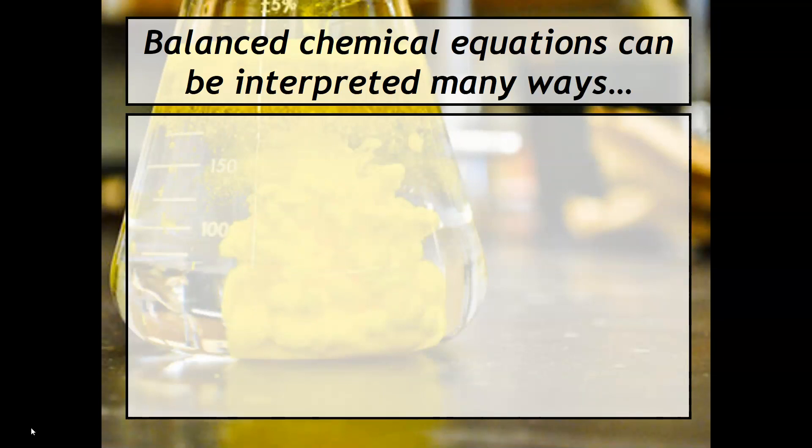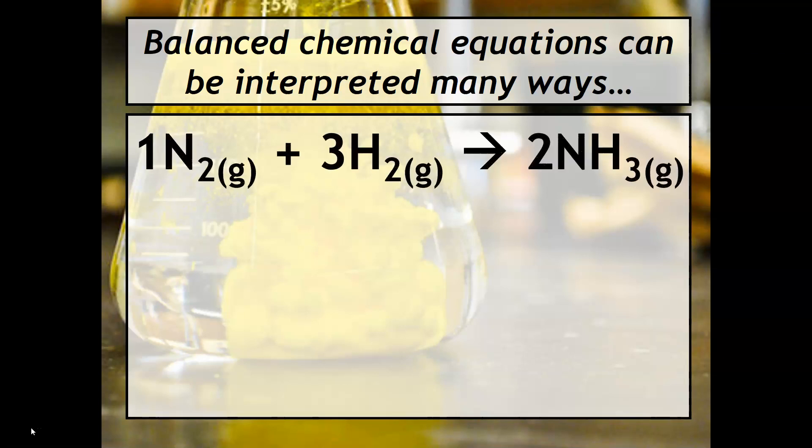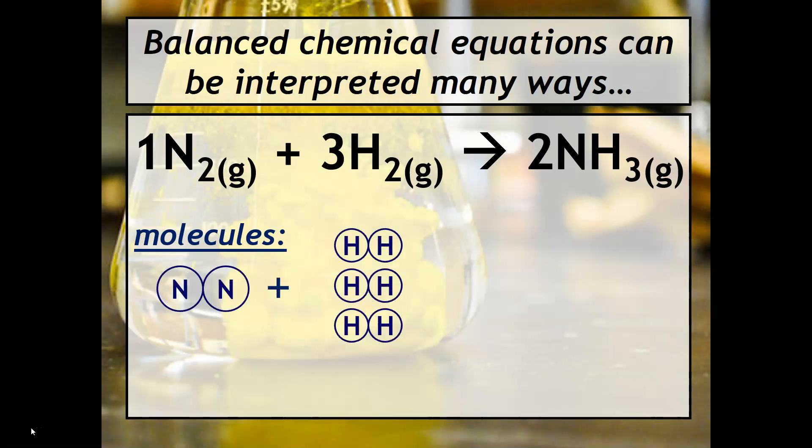The balanced chemical equation is really important, as you know, but we can interpret it in multiple ways. So if we take a look at the synthesis of ammonia we can interpret it in terms of molecules. For example, for every one molecule of nitrogen that reacts with three molecules of hydrogen, you get two molecules of ammonia.